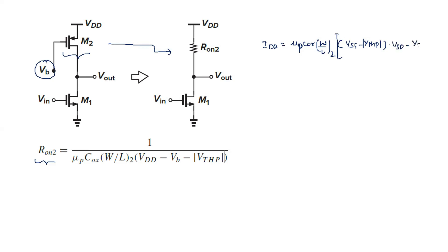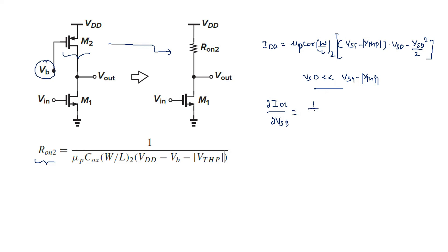The full expression includes the term V_SD minus V_SD squared over 2. In the deep triode region, V_SD is very much smaller than (V_SG − V_thp), so that squared term is negligible. If we differentiate this expression — del(id2) / del(V_SD) — then 1/R_on2 is obtained, and from that we can calculate R_on2.